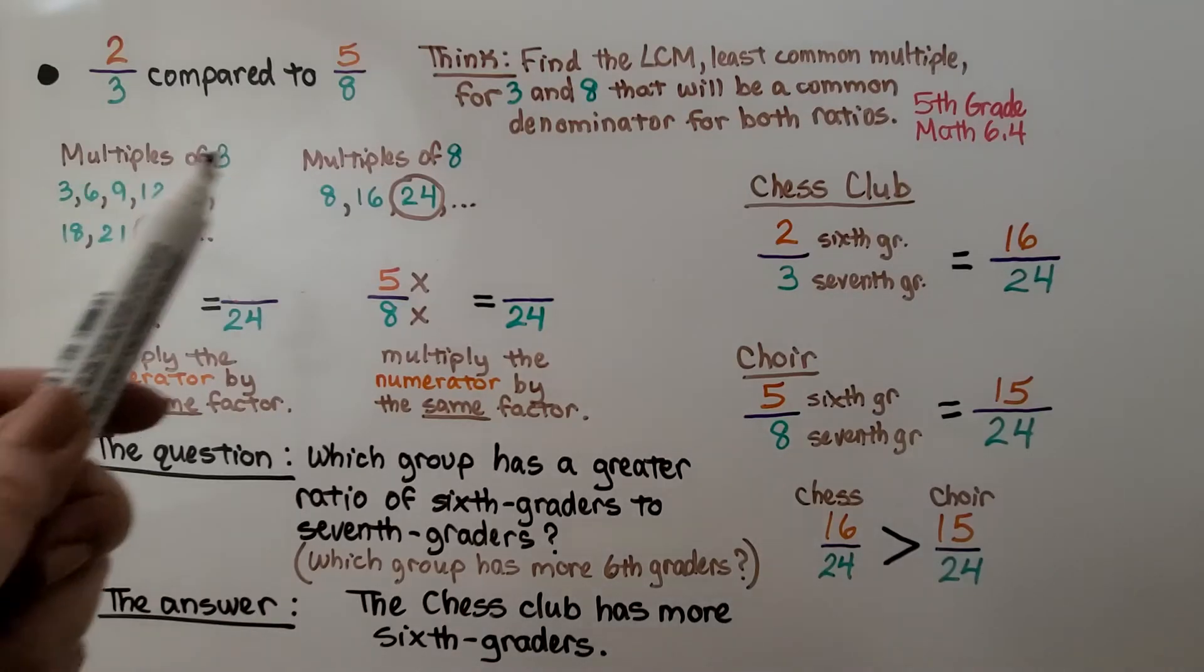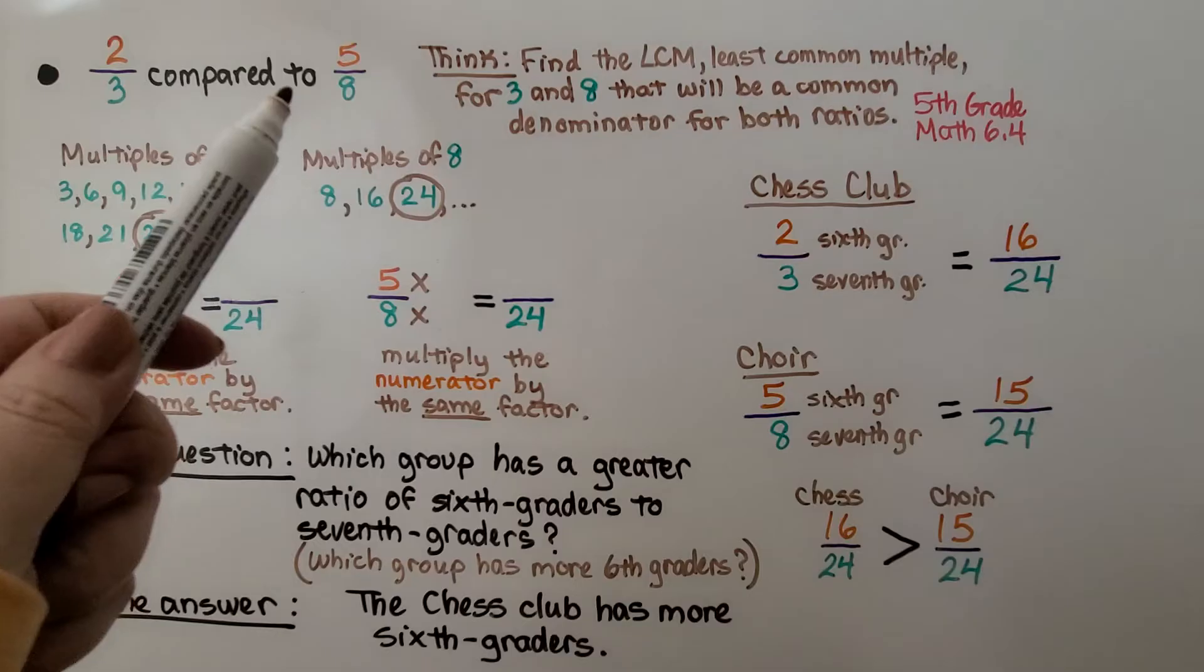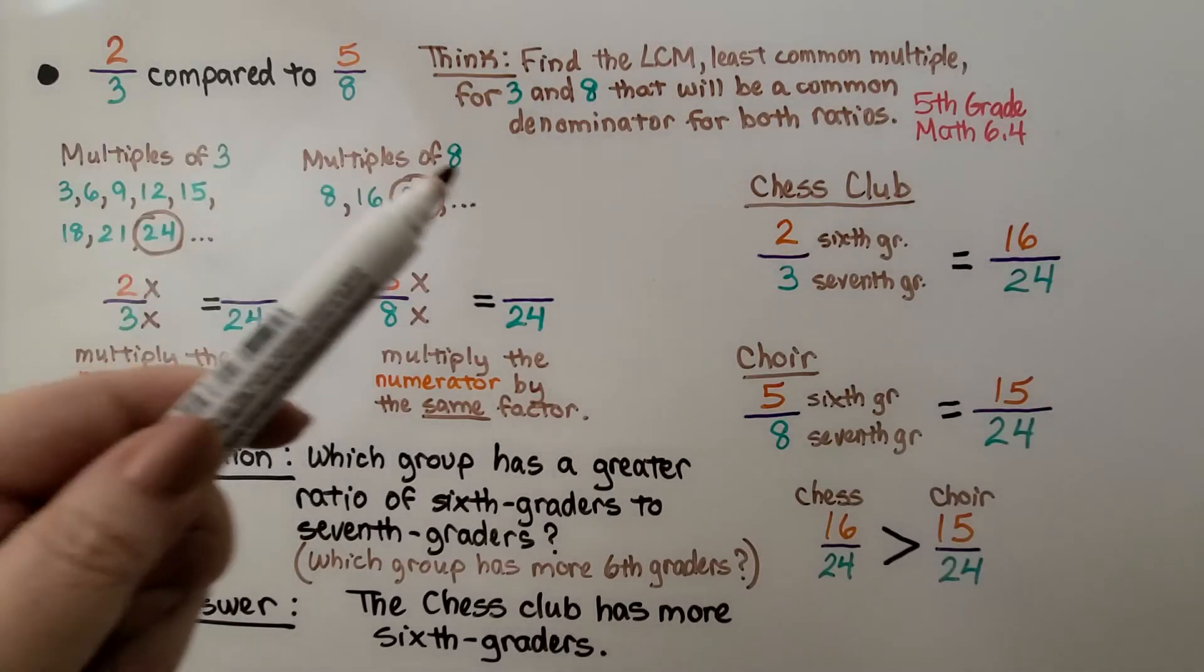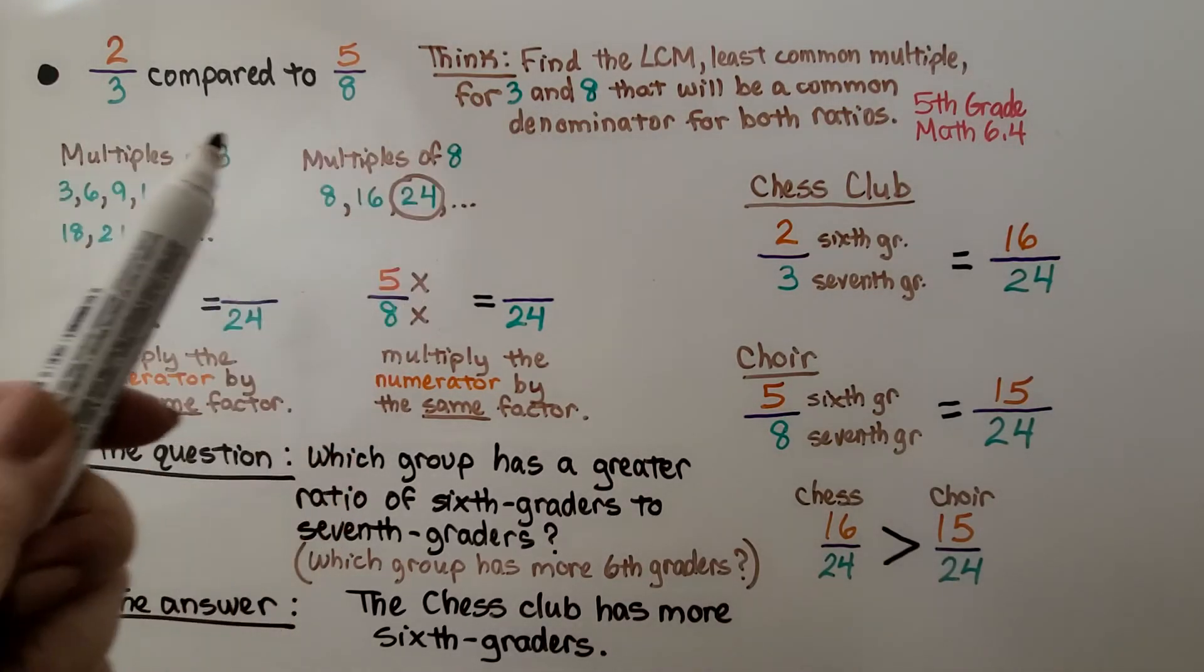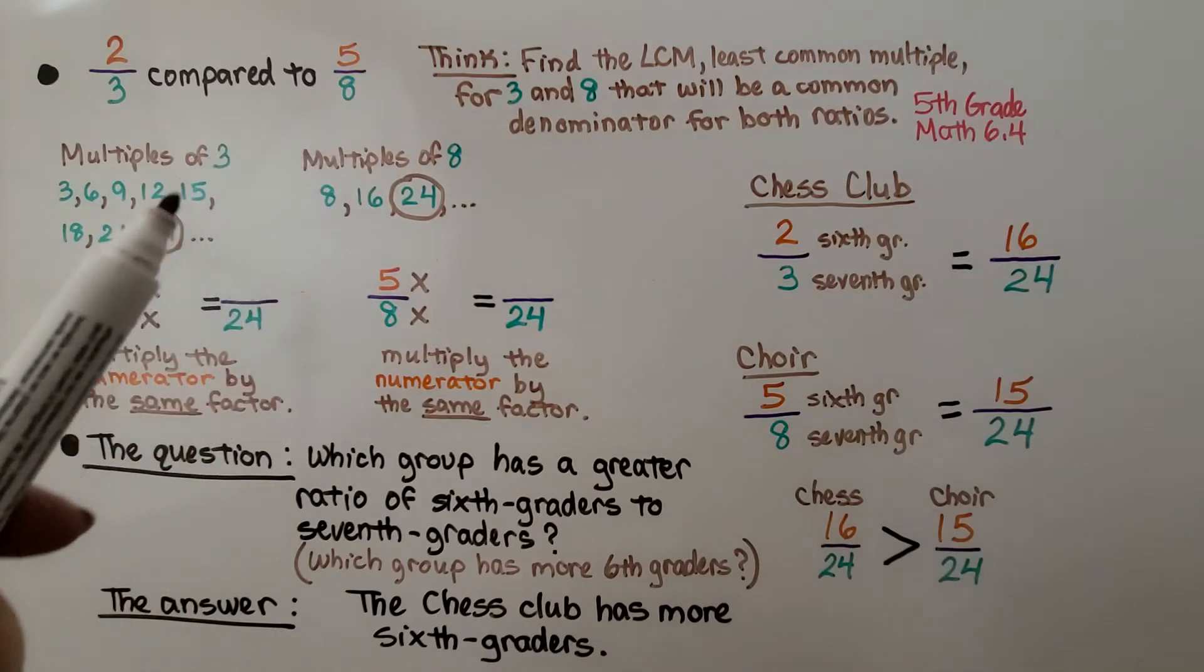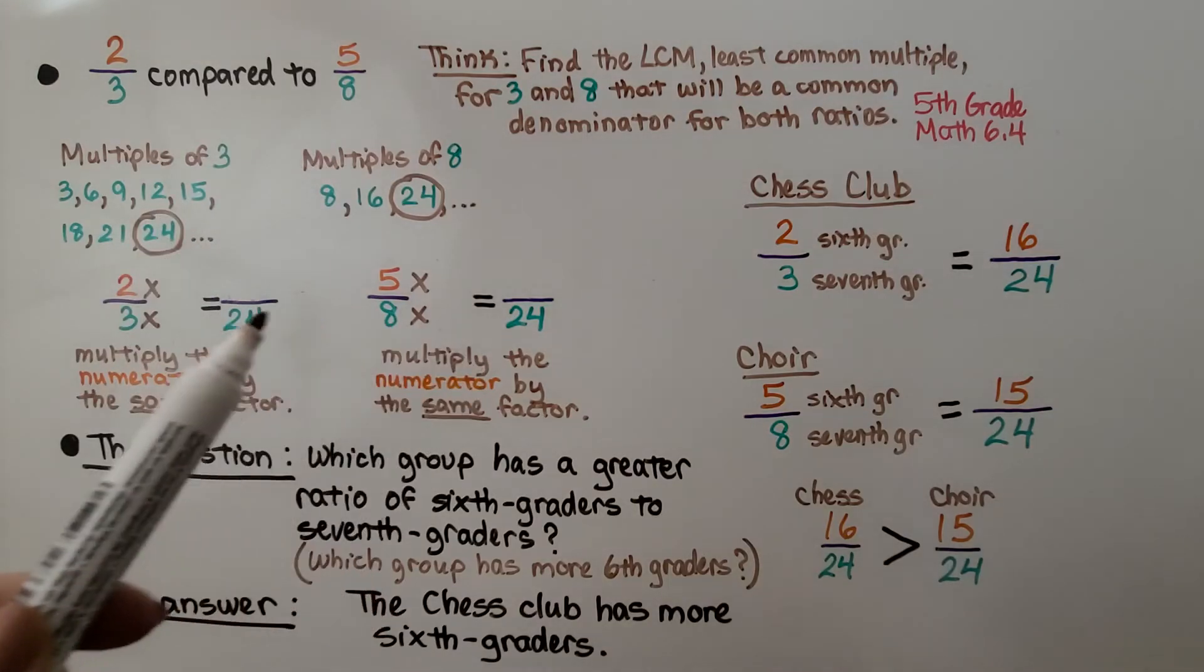2 thirds compared to 5 eighths, we think. We need to find the LCM, the least common multiple for 3 and 8, that will be a common denominator for both ratios. It will be the common second term.